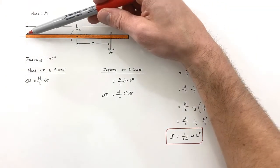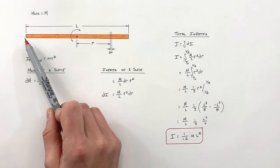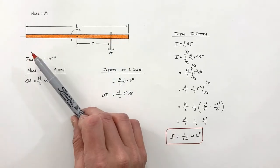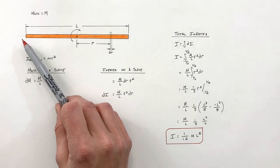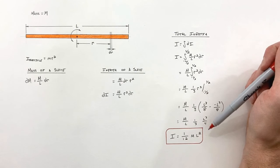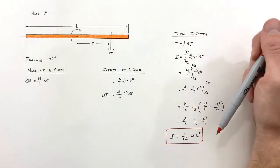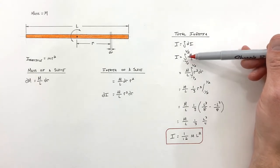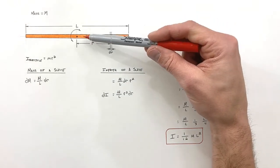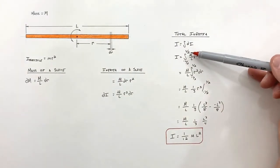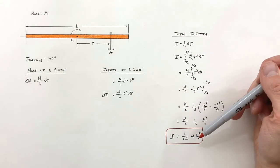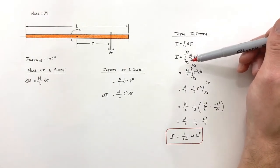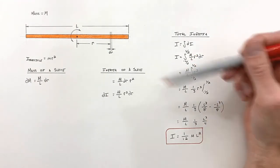For a rod rotated around its end, we had (1/3)ML², which makes sense — rotating around the end places more mass at a greater radius, so we expect a larger rotational moment of inertia. In fact, any time we rotate an object around its center of mass, we minimize its rotational moment of inertia. There are no limits of integration we could use that would produce a smaller value than (1/12)ML² for this rod.